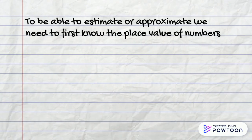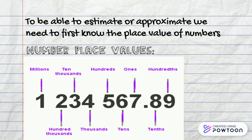To be able to estimate or approximate we need to first know the place value of numbers. Number place values: millions, hundred thousands, ten thousands, thousands, hundreds, tens, ones, tenths and hundredths.